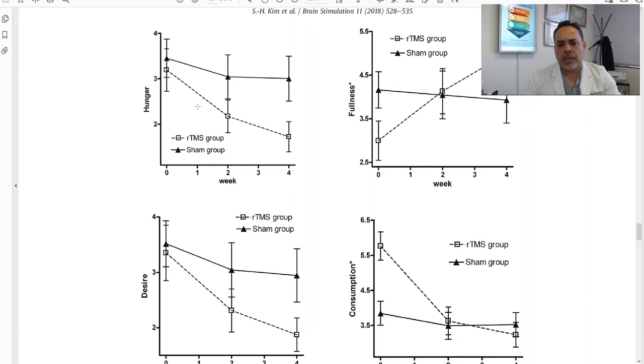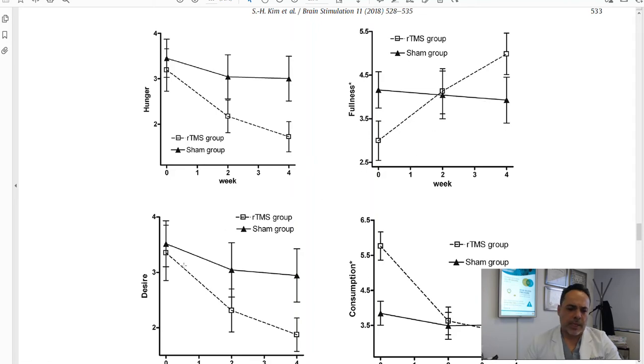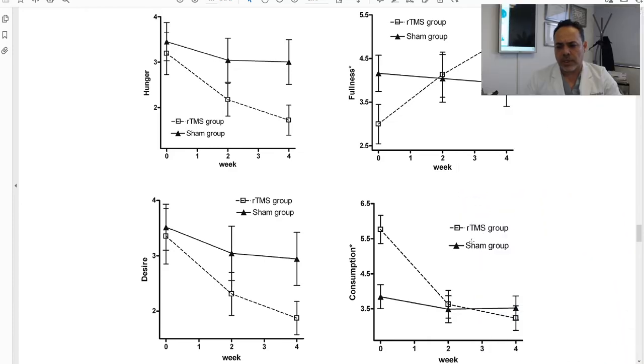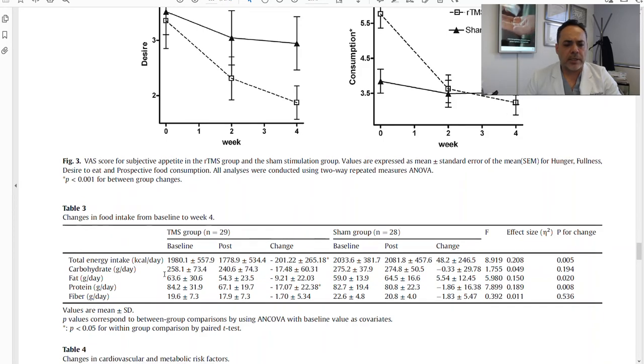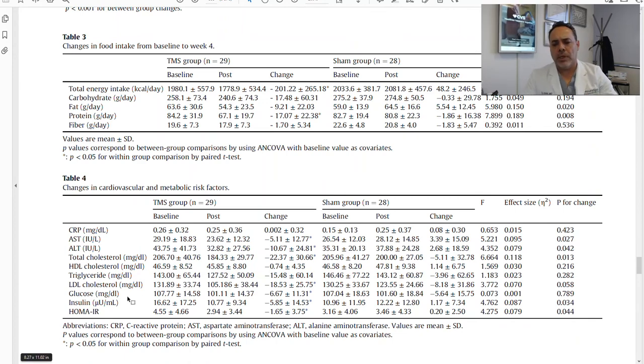Here are graphs showing how the hunger stimulus or the hunger intensity reduced significantly in the TMS group versus the sham group. The sense of fullness or satiety increased far more in the TMS group than the sham, and the desire to eat was far less in the TMS group than the sham. And they even measured total energy intake, i.e., calories per day, the total fat, they even measured liver enzymes and total cholesterol, and there was actually a significant reduction in cholesterol.